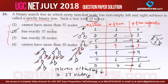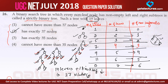As you can see, this is one of the easiest questions you can expect in the question paper, but you must know the basic concept of strict binary trees to solve it. In the next video, let us look at question number 27.